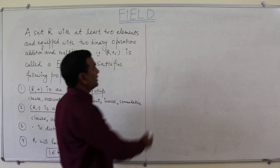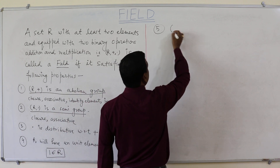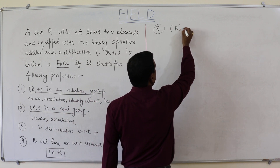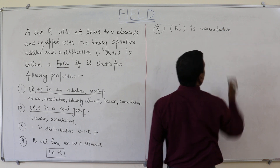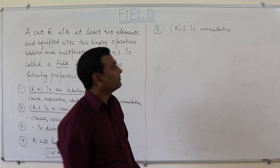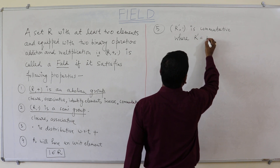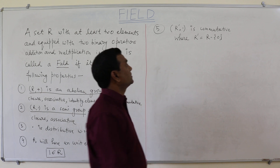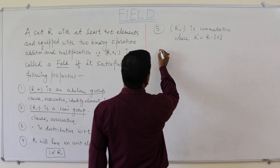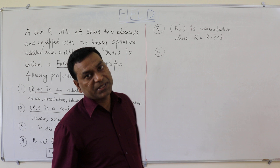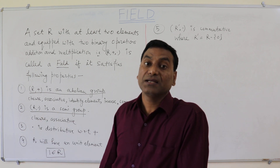Fifth property: (R*, ·) is commutative, where R* equals R minus {0}. In other words, this will be a commutative ring. These five properties are the ones we have already seen in the ring, and the sixth property is what makes the ring a field.